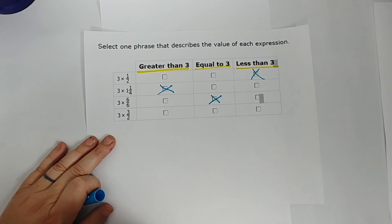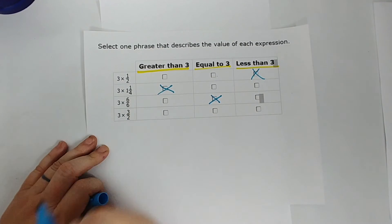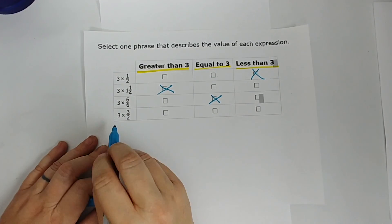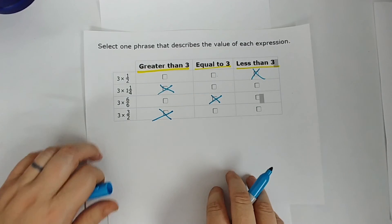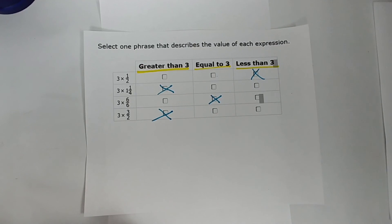Three times 3 halves — this is where they think they'll get you. Some kids think any fraction means the product is less than 1, but you know the fraction itself has to be less than 1. Three halves: 3 is greater than 2, so 3 halves is greater than 1. Your product is greater than 3. They cannot fool you anymore. If you multiply by a fraction that is greater than 1, you still get a bigger product. The only time you get a product less than what you started with is when your fraction is less than 1.